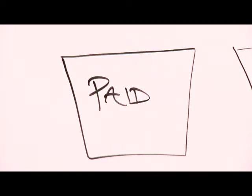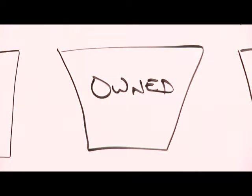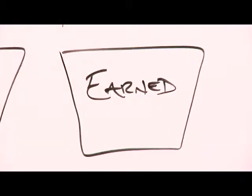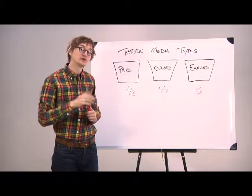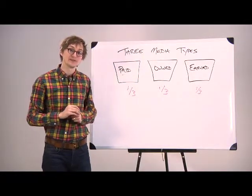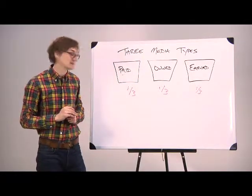So take a look: do you have one third paid, one third owned, and one third earned? If not, how can we increase the number of the one that's lagging behind?